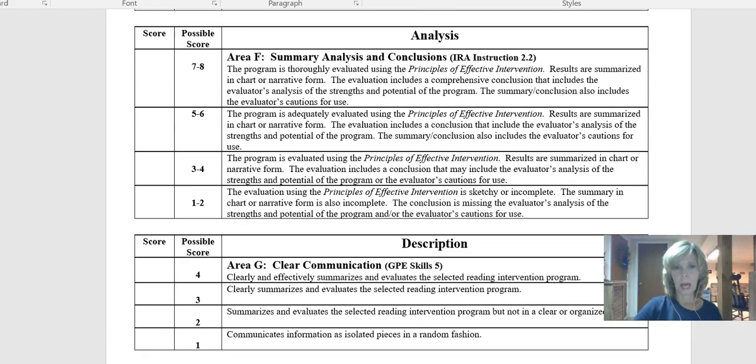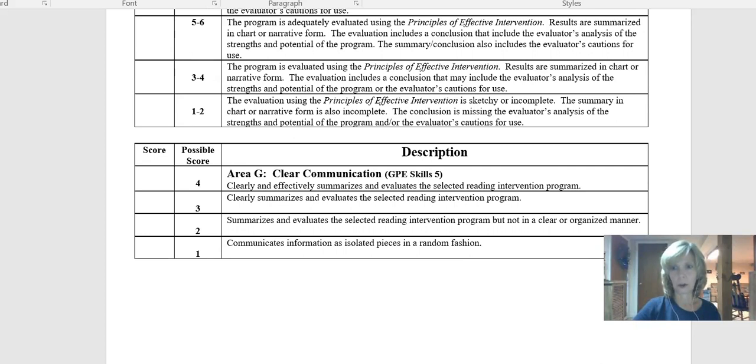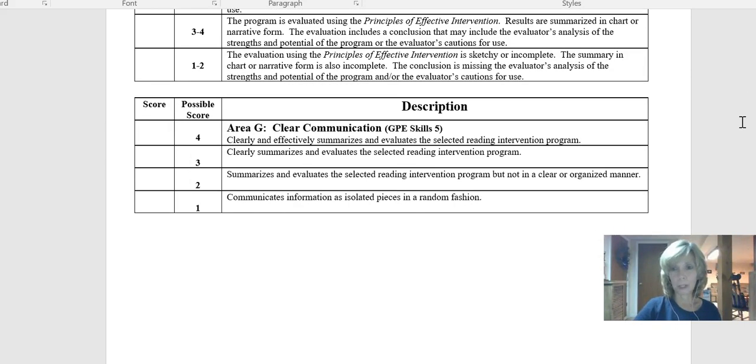Okay. And then your final analysis. Also, what do you think of this program? And then area G is just your points for clear writing, clear coherent writing. Okay. So that's how the whole thing goes.